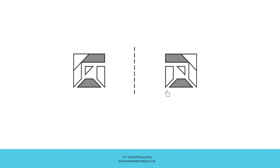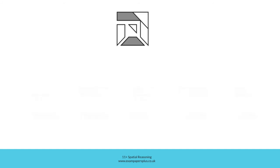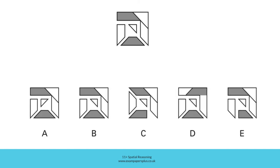We can now look for this reflected version of the figure amongst the five answer options. In option A you can see that this shape is correct, and the position of this one and of the larger shape is right too, but the triangle is in the wrong orientation. Remember it should mirror the orientation of this triangle and in A it doesn't, so A is not the right answer. In B the triangle is correct and all the remaining elements of the figure are also correctly placed and shaded, so B could be correct.